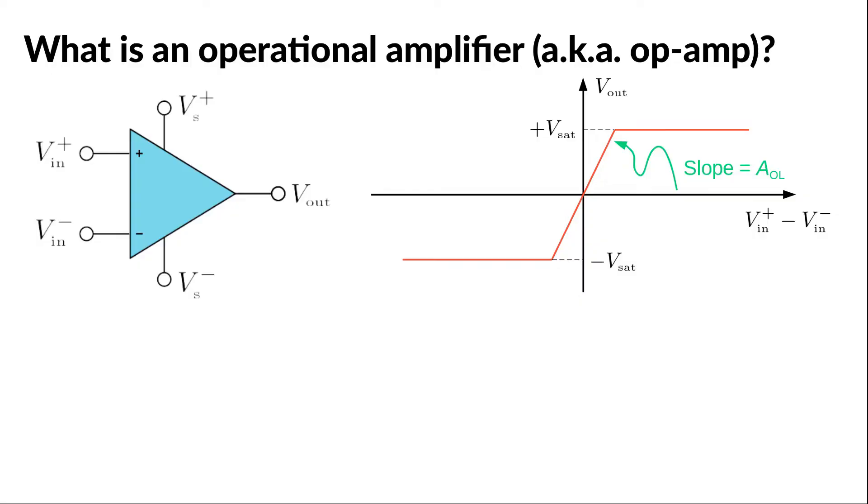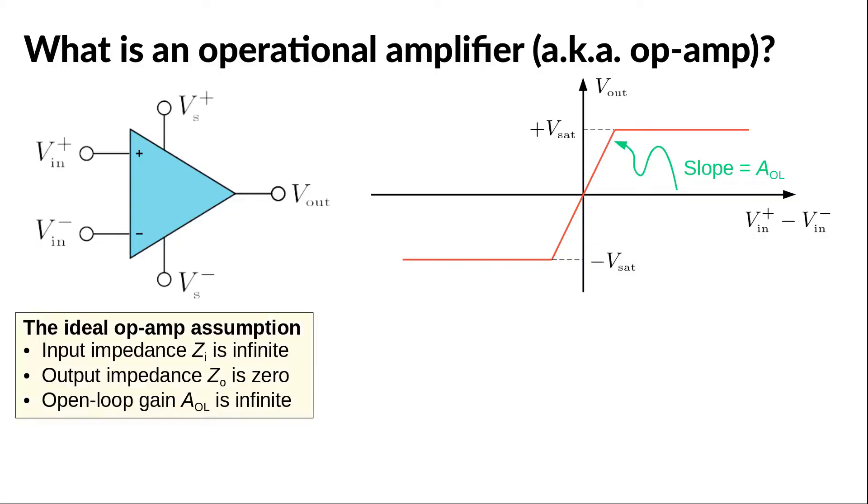Now, in order to analyze circuits with op-amp, we almost always use the ideal op-amp assumption, because it is very accurate. The input impedance of an ideal op-amp is infinite, the output impedance is 0, and the open-loop gain is infinite.